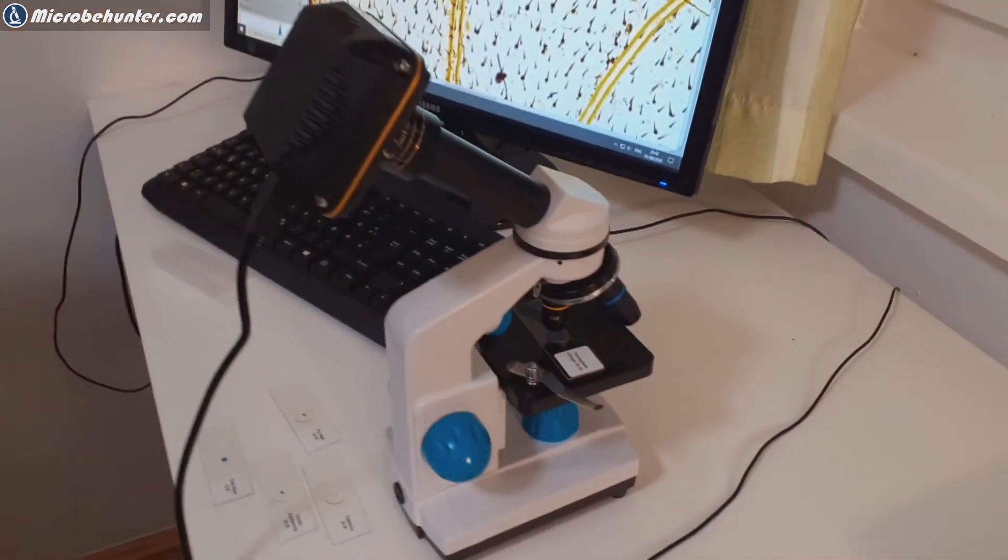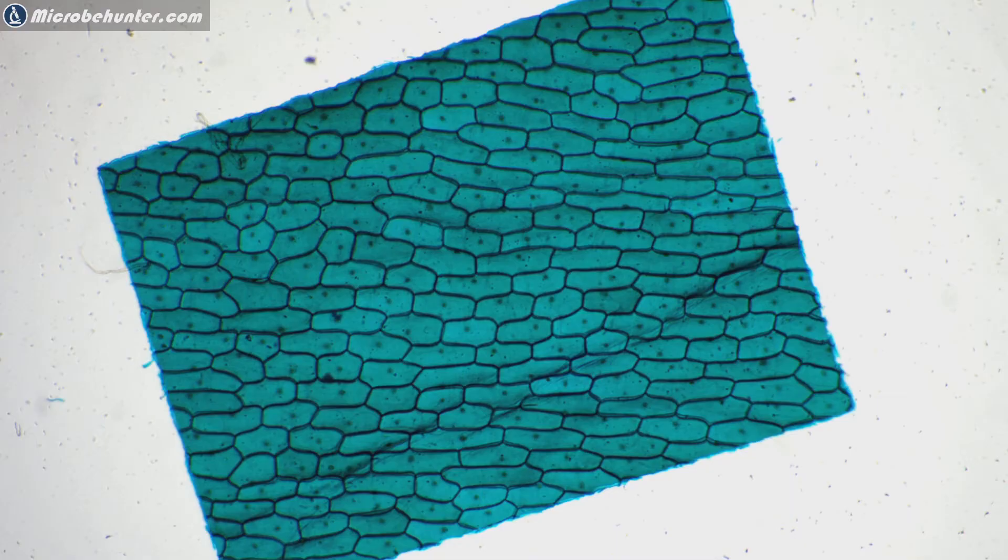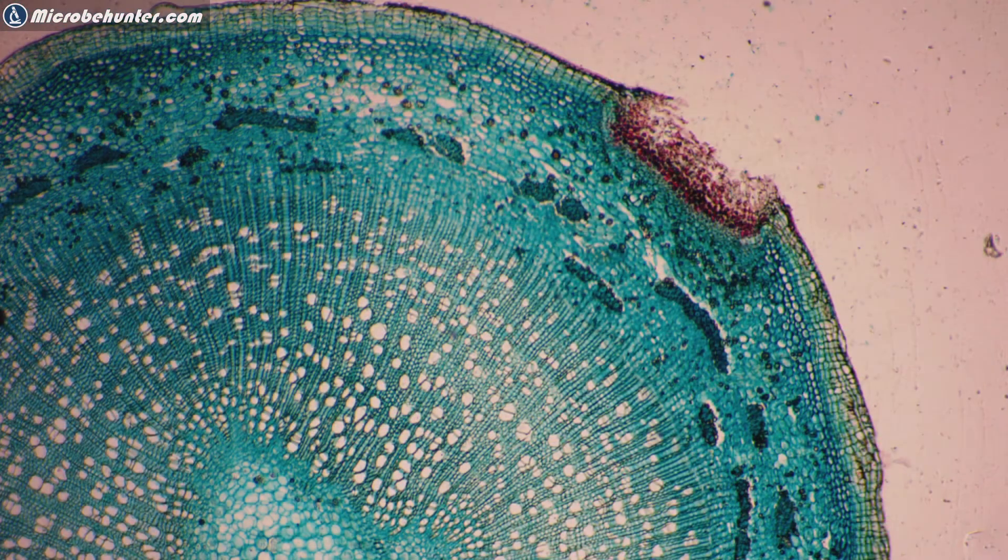This of course allows you also to do live microscopy without having to look through the microscope itself. So this now these are onion cells with a 4x objective. Again it is now with a 10x magnifying objective, the little dots that you see in the cells of course these are the nuclei. Cross-section of a stem of Tilia is called, the plant.